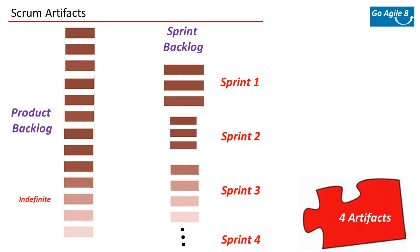The sprint backlog is a forecast by the team about what functionality will be made available in the current increment and the work needed to deliver that as a working product increment. Once you finalize items for the current sprint, ideally you should not make any changes to the scope. If the product owner wants changes, the scrum master should try their best to resist — scope churn results in many issues: velocity takes a hit, project timelines get disturbed.